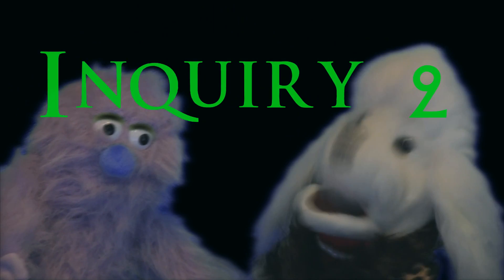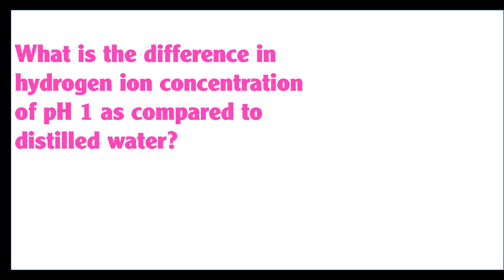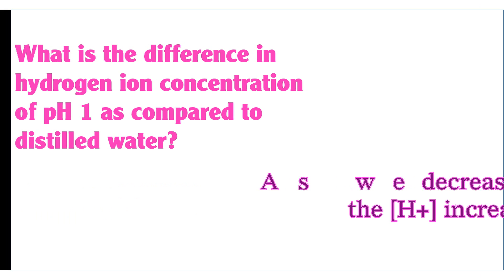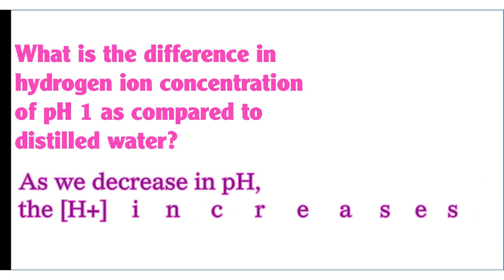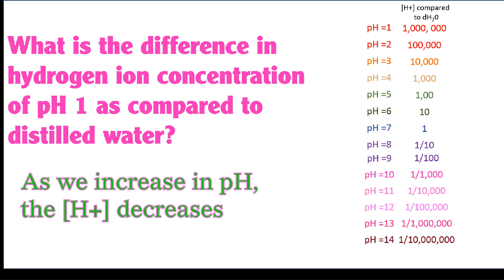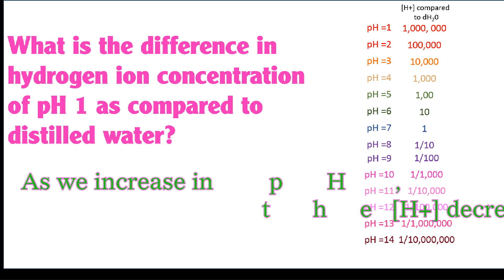We can map out for each pH unit how much the hydrogen ion concentration changes. So the question says, what is the difference in hydrogen ion concentration of pH 1 as compared to a pH of 7? We can determine that if the pH of 7 was 1, then at a pH of 1, it would be a million.